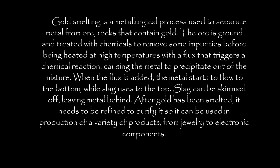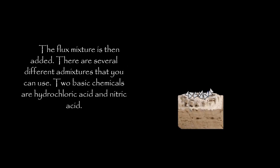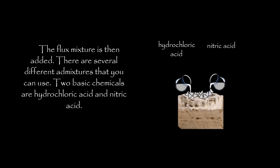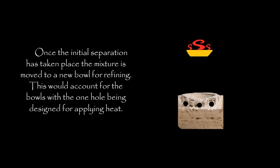After gold has been smelted, it needs to be refined to purify it, so it can be used in production of a variety of products, from jewelry to electronic components. The process starts with raw crushed ore. The flux mixture is then added — there are several different admixtures you can use; two basic chemicals are hydrochloric acid and nitric acid. Once the initial separation has taken place, the mixture is moved to a new bowl for refining. This would account for the bowls with one hole being designed for applying heat.